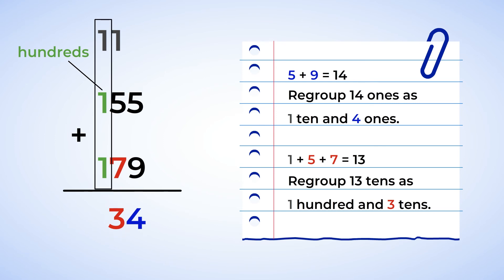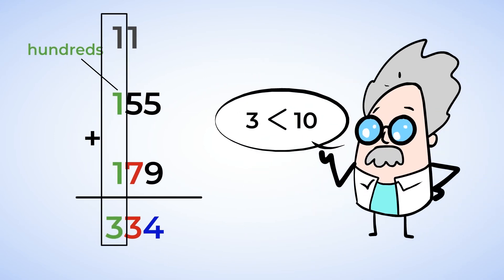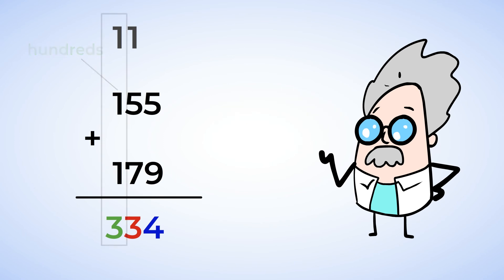100 plus 100 plus this 100 here above is equal to 3 hundreds. As 3 is less than 10, I don't need to regroup. No more digits in the place. We did it.